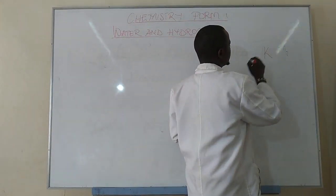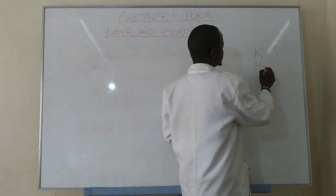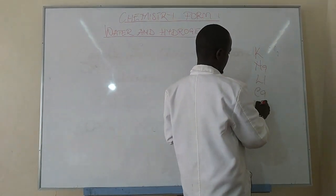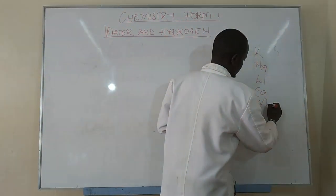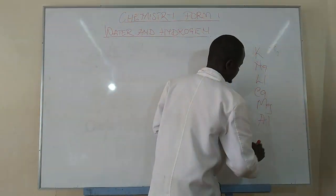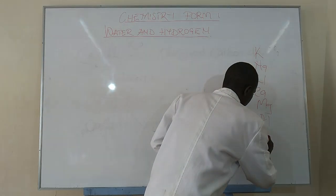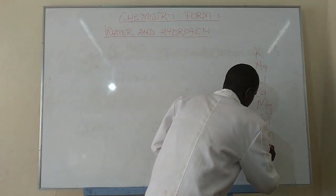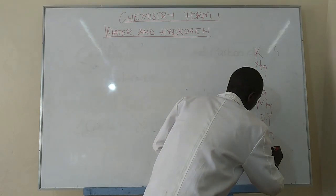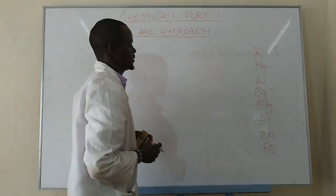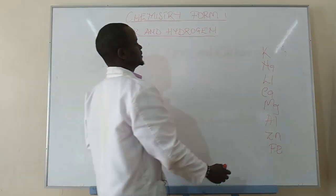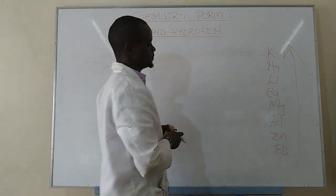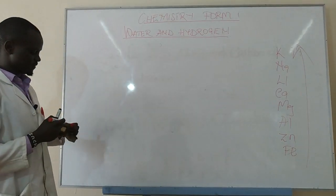The reactivity series includes: potassium, sodium, lithium, calcium, magnesium, aluminium, zinc — and we can stop at iron. The reactivity series goes from the most reactive at the top to the least reactive at the bottom.